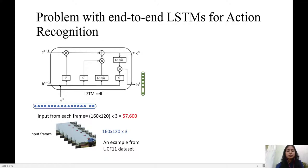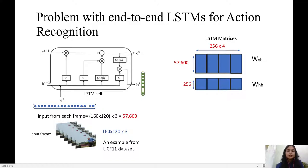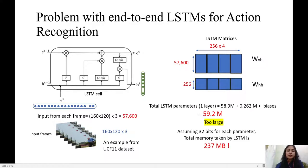For an example taken from UCF-11 dataset of 3 channels of 160x108 pixels each, the combined LSTM matrices are shown as WVH which is multiplied to the input vector VT and WHH multiplied to the hidden state vector HT. The large input dimension and the hidden state lead to millions of LSTM parameters which require hundreds of MBs of space.